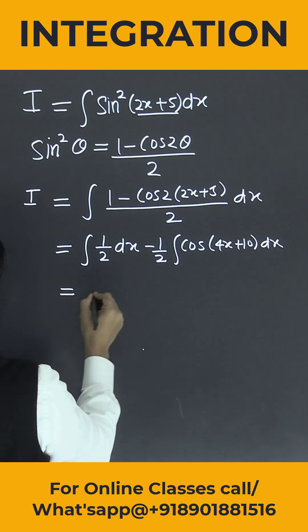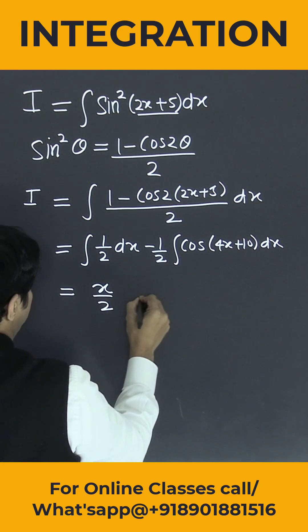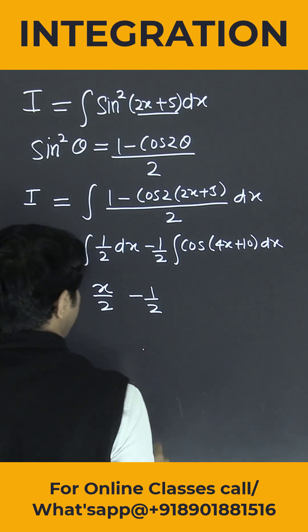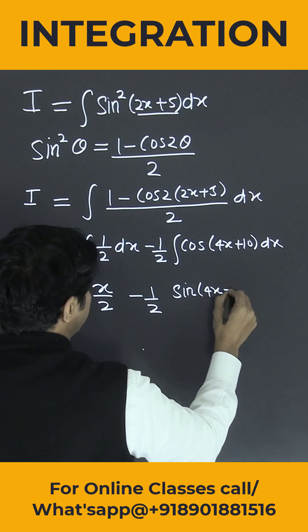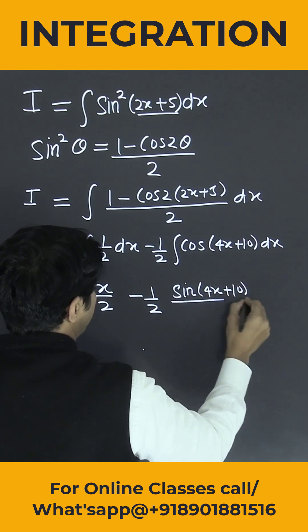So this is equal to x by 2 minus 1 by 2. What is the integration of cos? It is sine. So this is sine of 4x plus 10 divided by 4.